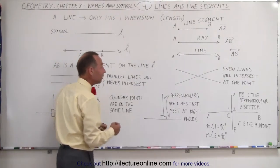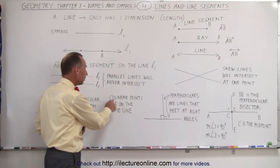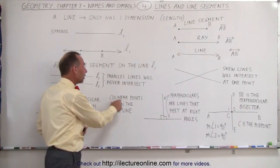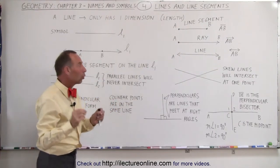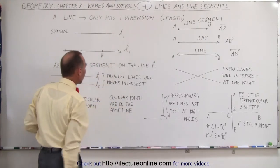Collinear points - that means that both of them are on the same line. Co means together, and so together on the line, two points are collinear. For example, A and B are two collinear points because they're both on the line L1.